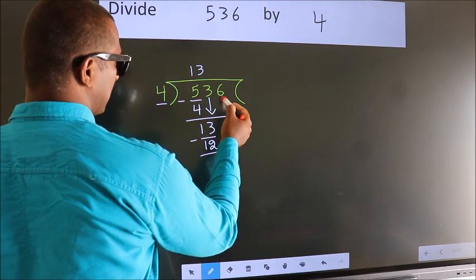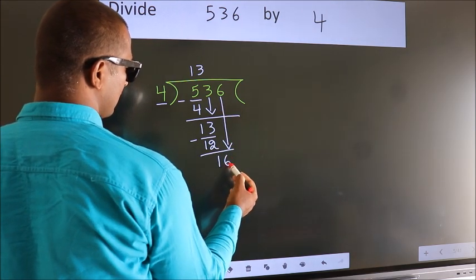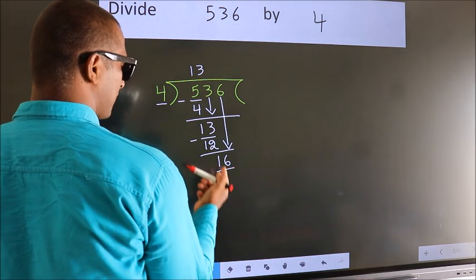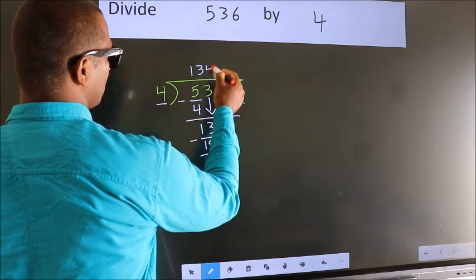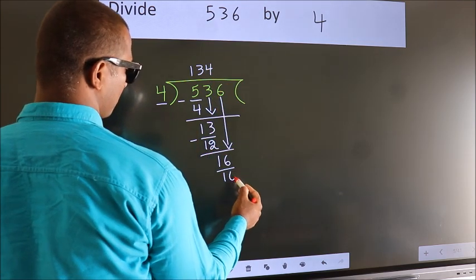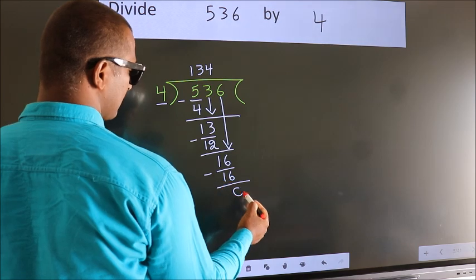After this, bring down the beside number. So, 6 down. So, 16. When do we get 16? In 4 table, 4 fours, 16. Now, we subtract. We get 0.